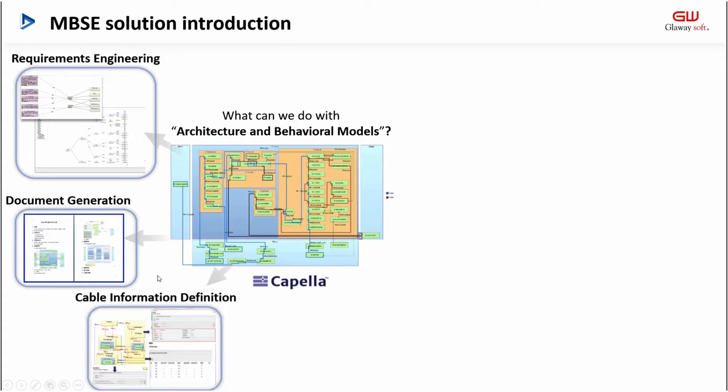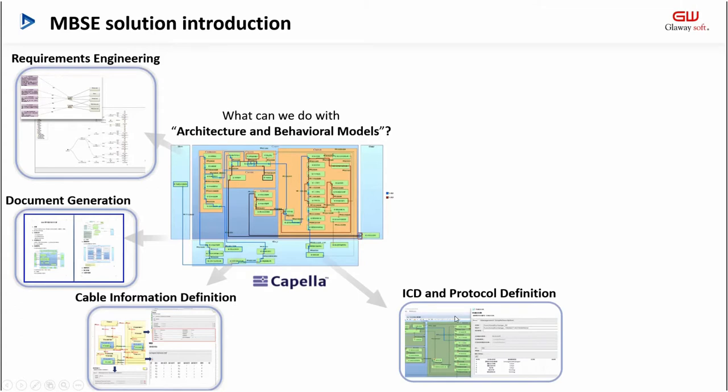The third item is the definition of cable information. It mainly allows designers to define physical attributes in the physical connection lines in the PAB diagram, such as cable length, type, wear, connection, and so on. The fourth item is the definition of ICD and protocol. It mainly supports defining signals and messages on component exchanges in LAB. The fifth item is reliability analysis. It mainly supports the definition of reliability analysis and testability analysis related elements on the model, such as failure mode, failure probability, test items, test points, and so on.